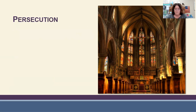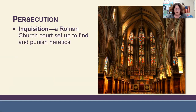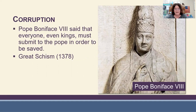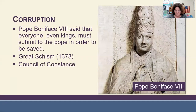By the 13th century more and more people questioned the teachings of Rome, which led to persecution. The Roman church authorized an Inquisition — a church court set up to find and punish heretics. Regarding corruption: Pope Boniface the Eighth declared that everyone, even kings, must submit to the pope to be saved. Then there was the Great Schism in 1378, a time when there were three different popes, resolved at the Council of Constance, which decided which of those three would ultimately become pope.